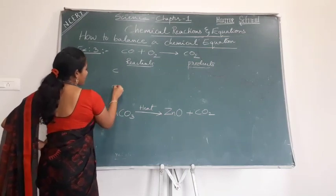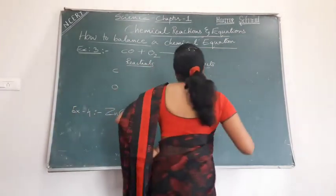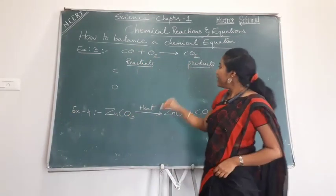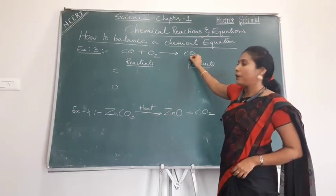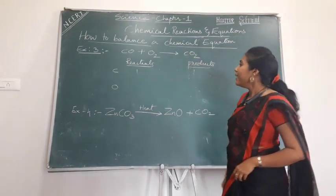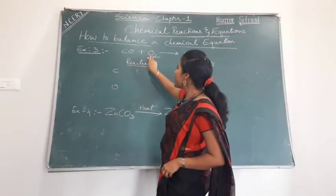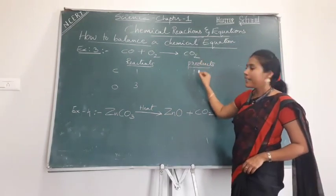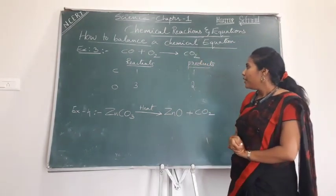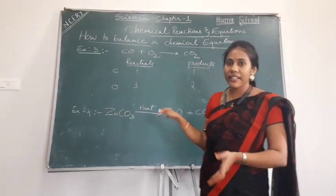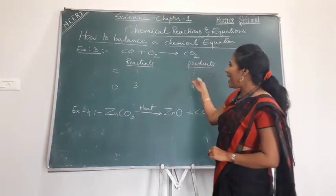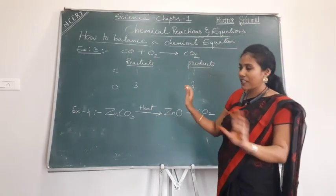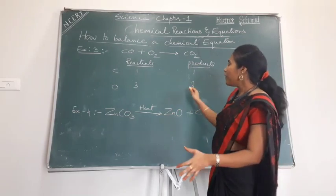The elements present are carbon and oxygen. Check how many carbons are in the reactant side: one. In the product side: also one. Now, how many oxygens in the reactant side? Three. In the product side: two. So it's clearly not balanced. Carbon is balanced — one on each side — so no need to touch carbon.